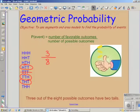So to answer this question, three out of the eight possible outcomes have two tails.